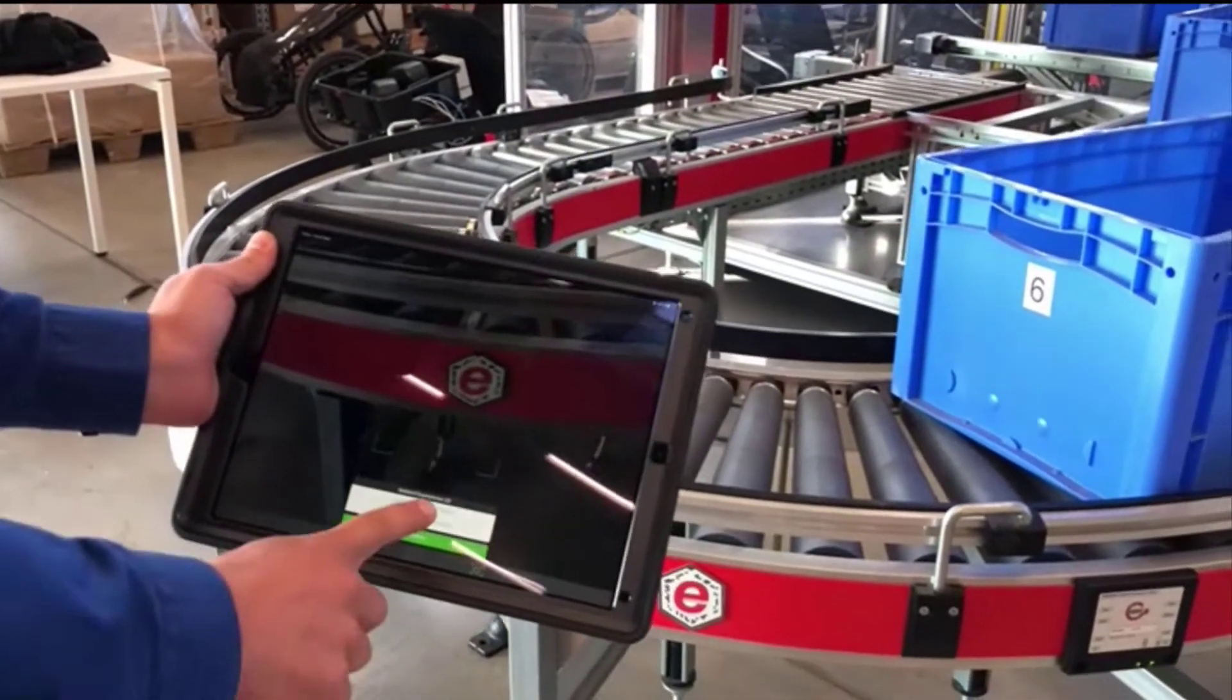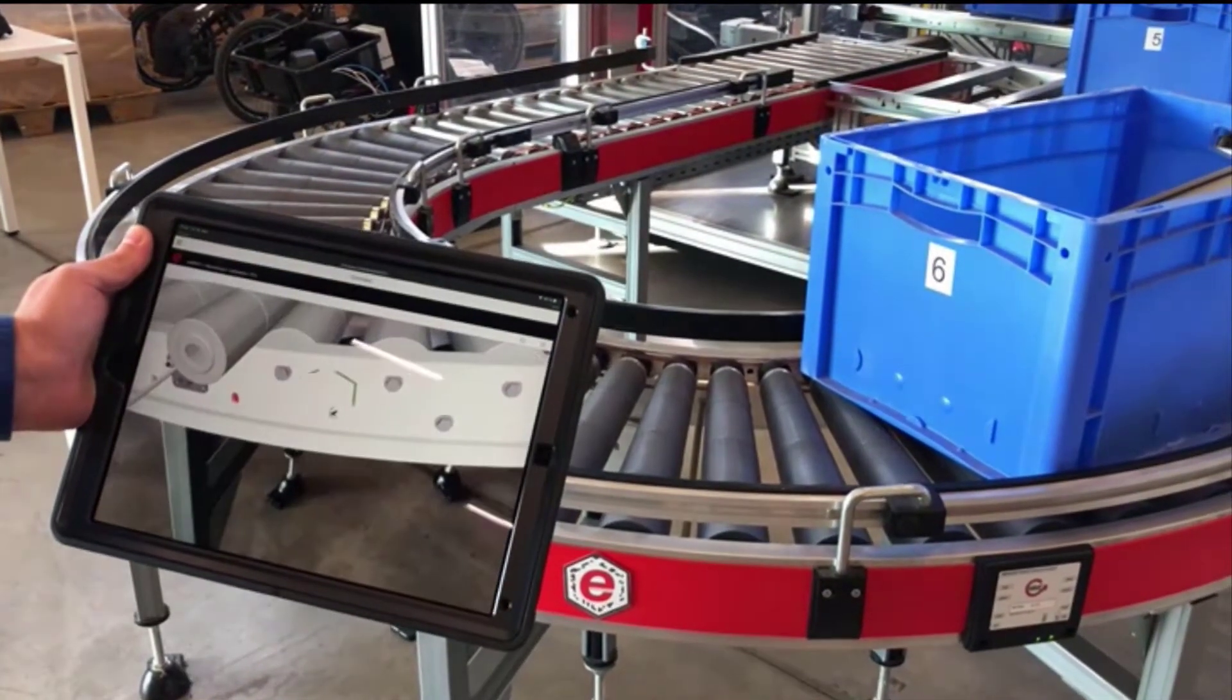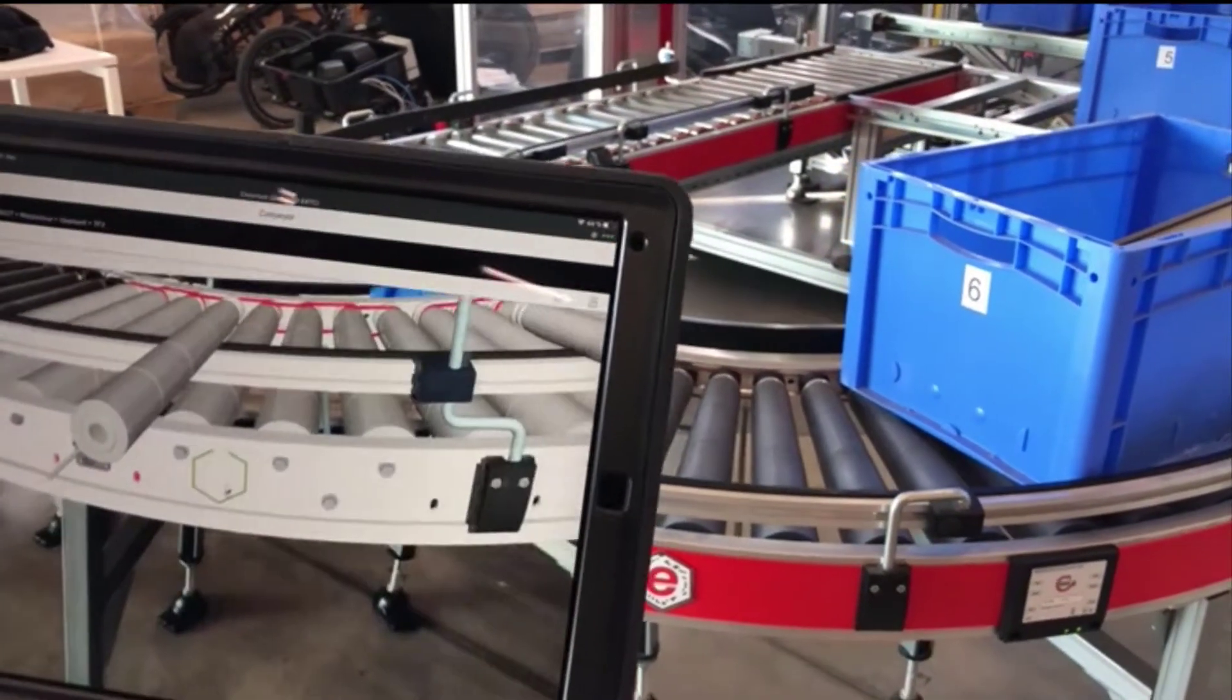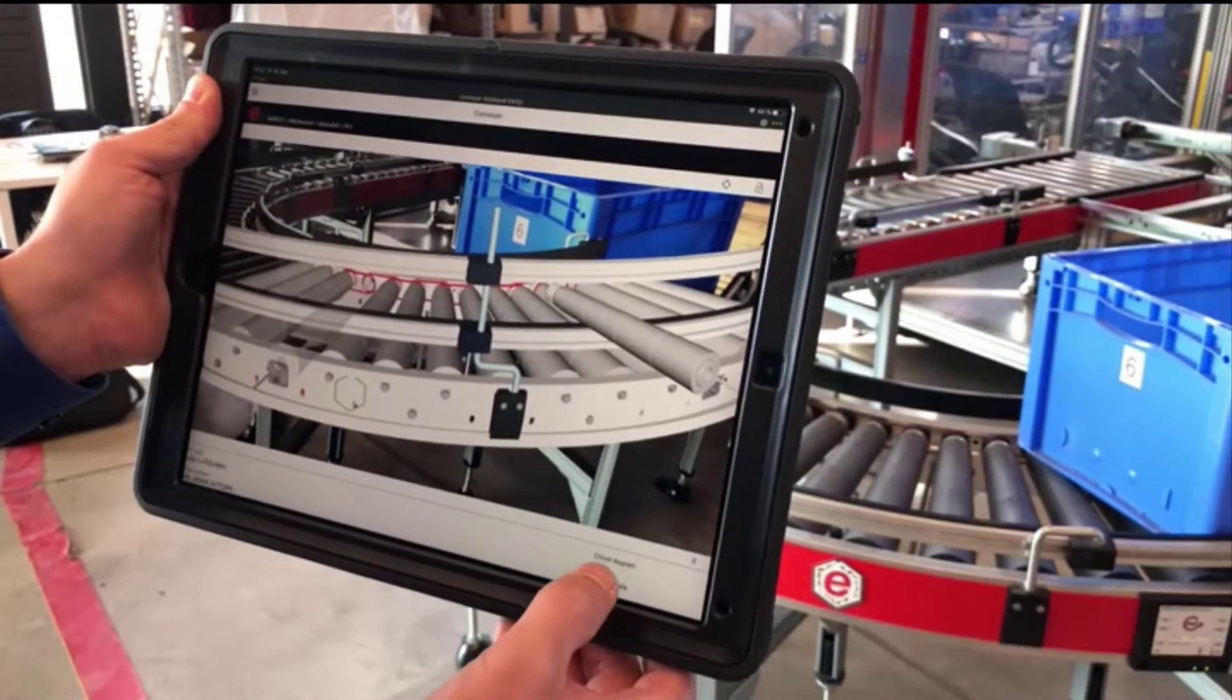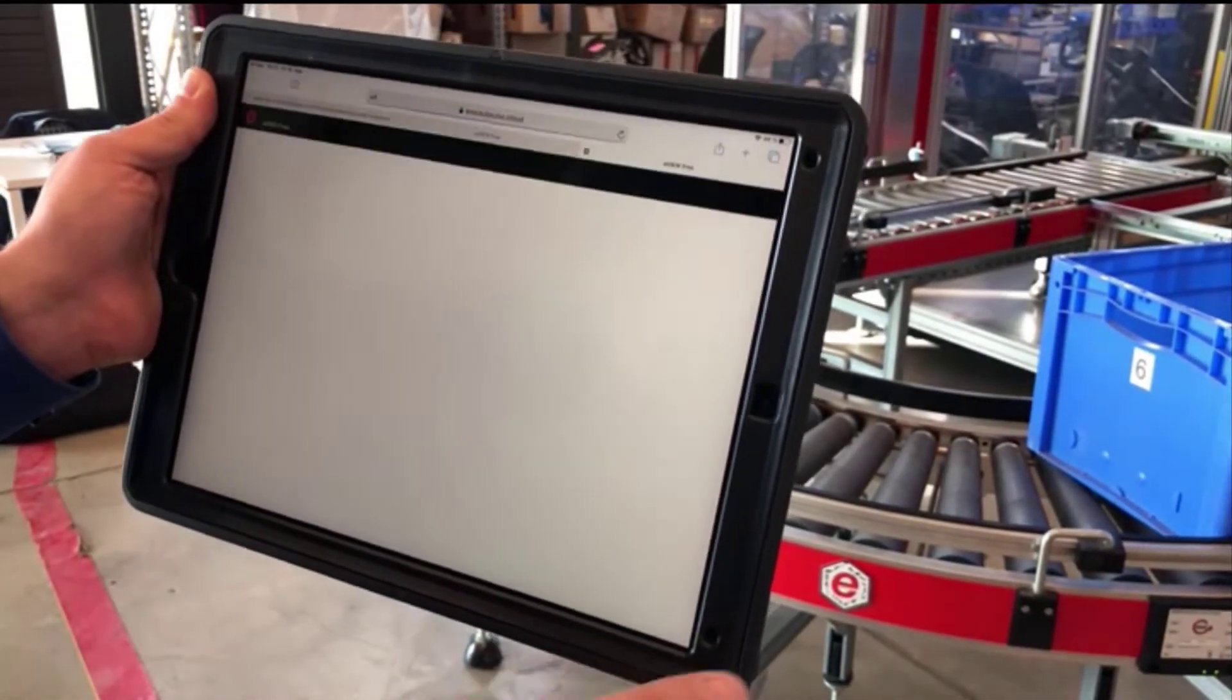The next step is to check if there is an electrical issue. Using ePlan eView and our augmented reality application based on PTC technology, the technician gets access to relevant mechanical and schematic information of the motor.